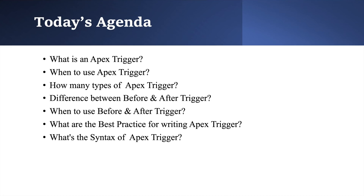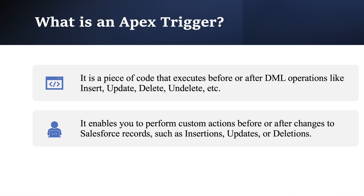So let's start with the first question: What is an Apex Trigger? An Apex Trigger is a piece of code which executes whenever we perform any DML operations like insert, update, or delete on any record. It also enables a developer to perform custom actions like creating, deleting, or updating a record, or firing an error before or after the record gets saved to the database.